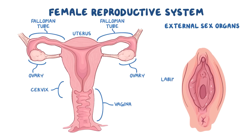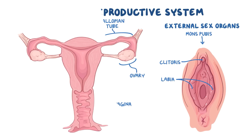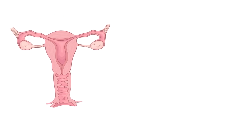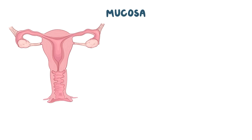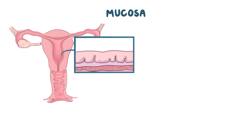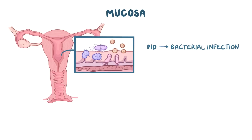The external genitals include the labia, the clitoris, and the mons pubis. The vagina, uterus, and fallopian tubes all have a mucosa, which is the layer of epithelial cells that lines the inside of these organs. PID usually develops from a bacterial infection in the vagina or the cervix, which causes inflammation of this mucosal layer.